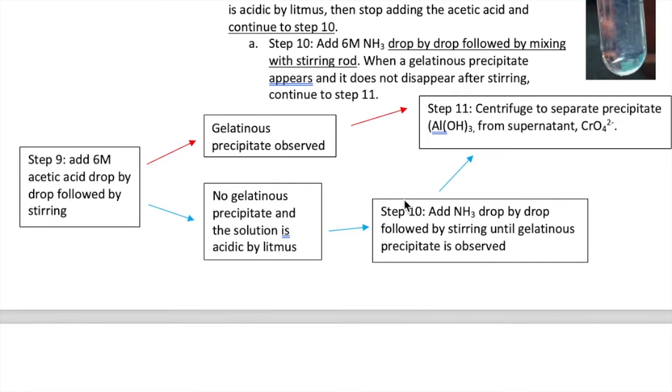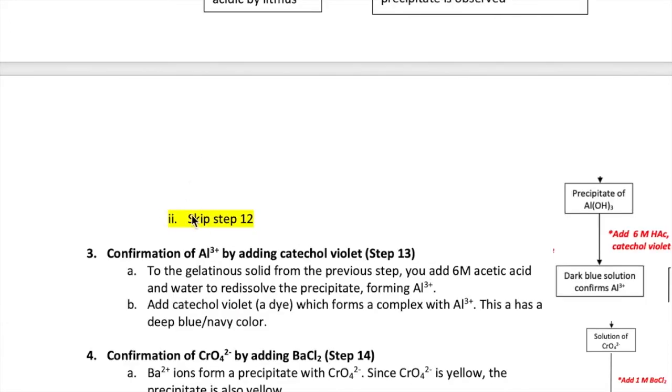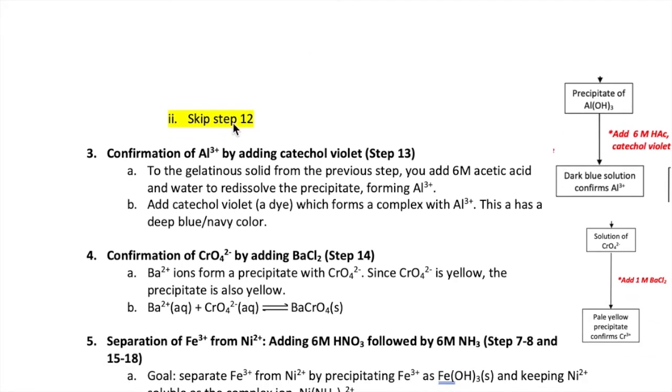Now regardless of which step you did, after centrifugation you should now have a pellet that contains aluminum hydroxide and the supernatant that contains the chromate ion. Now you're going to continue with the pellet first. You want to skip step 12, which is the washing step for the pellet.